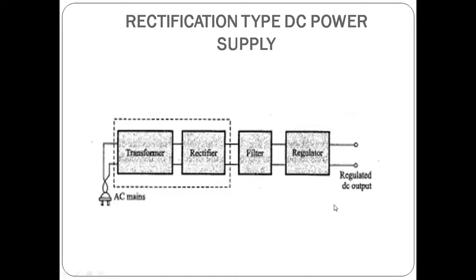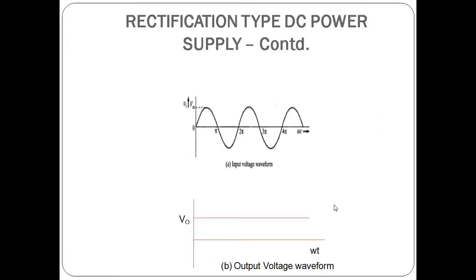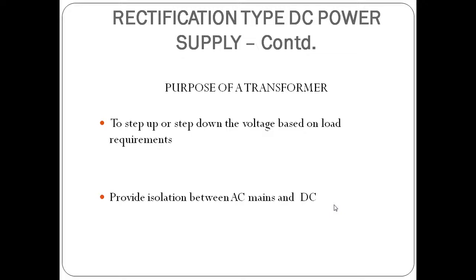What is the purpose of this transformer? A transformer is used to either step up or step down the voltage based on load requirements. For example, if you require a low voltage supply, we use a step-down transformer initially, and after that it will be rectified to form a DC output. The other purpose of a transformer is to provide isolation between AC mains and DC.